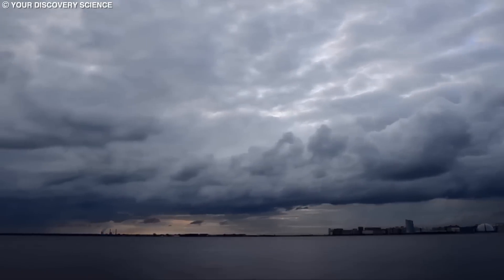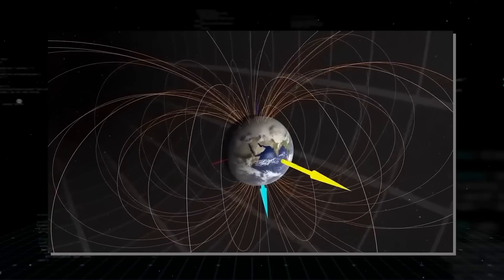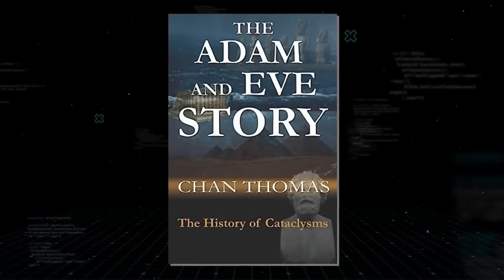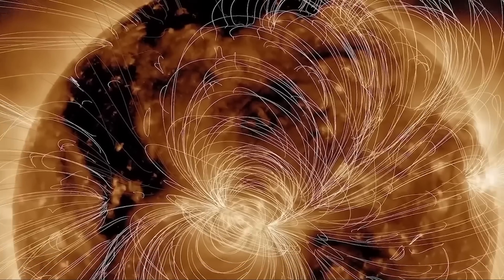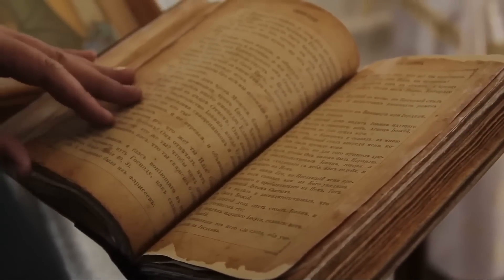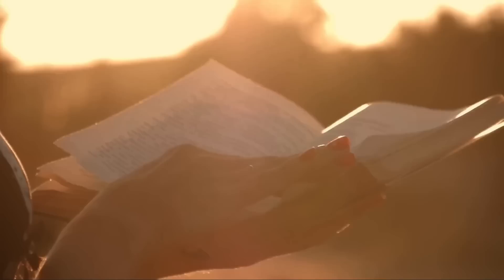In a lesser-known book called The Adam and Eve Story by Chan Thomas, the author also discussed this theory, although the original book is no longer available, and a CIA-published version is heavily censored.